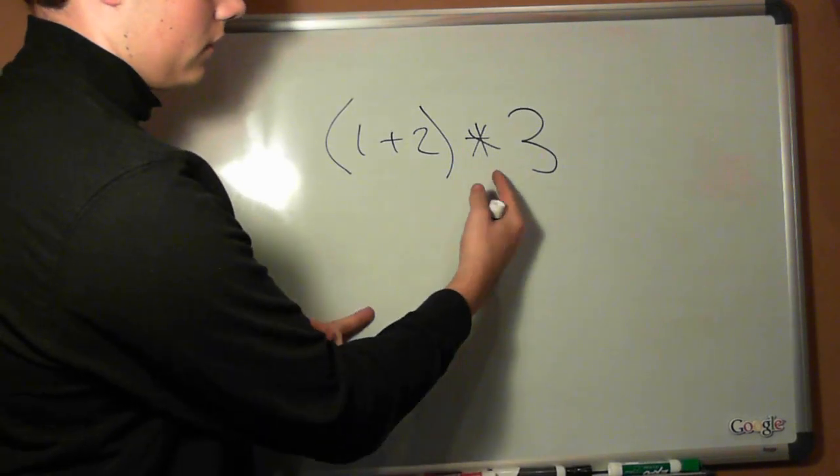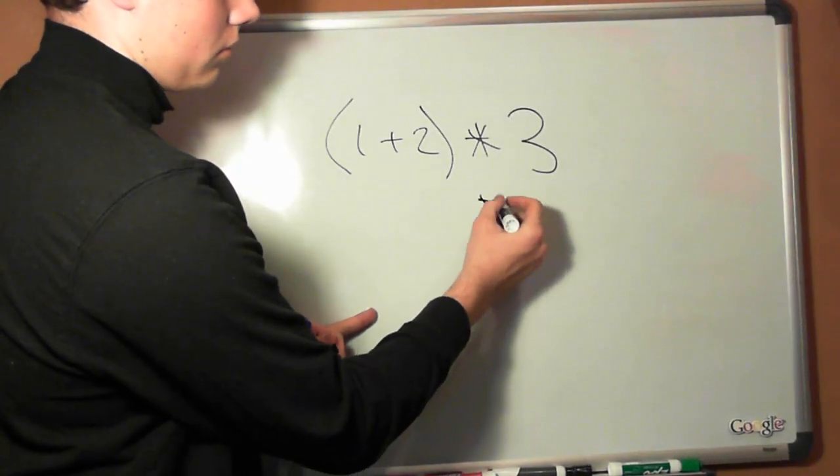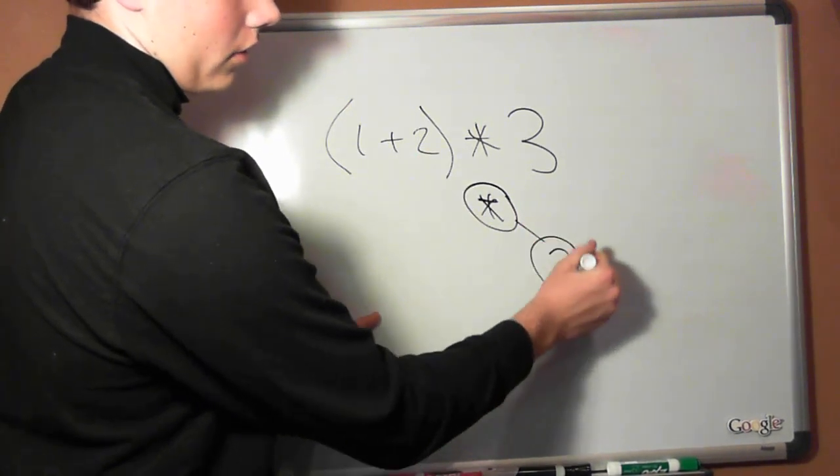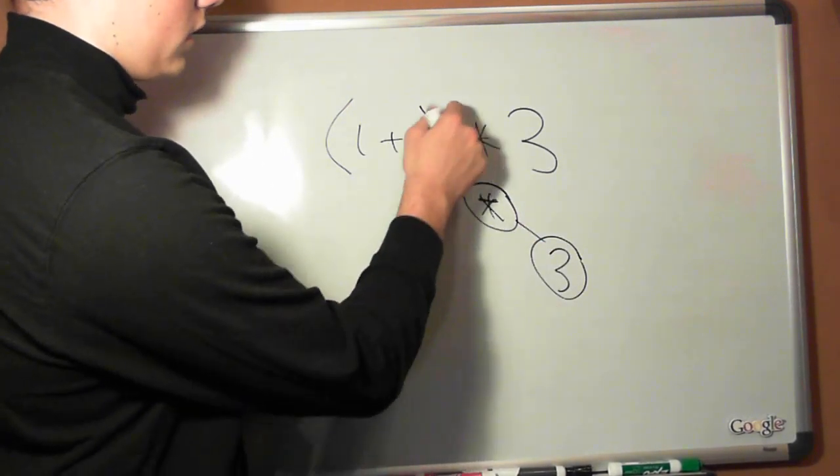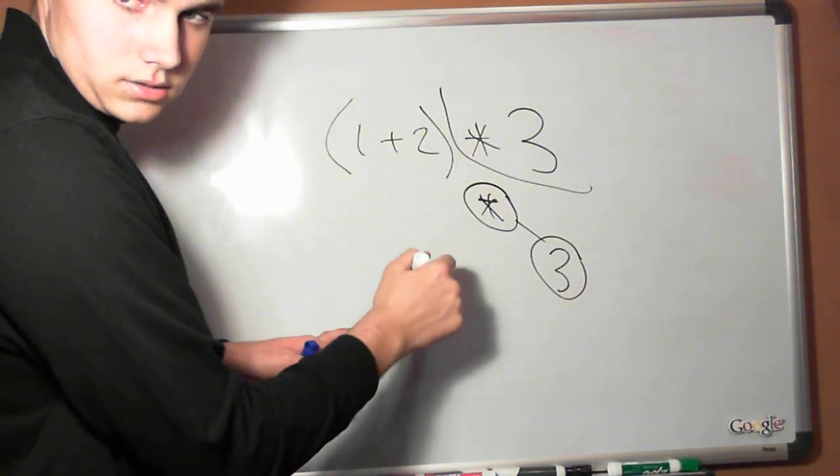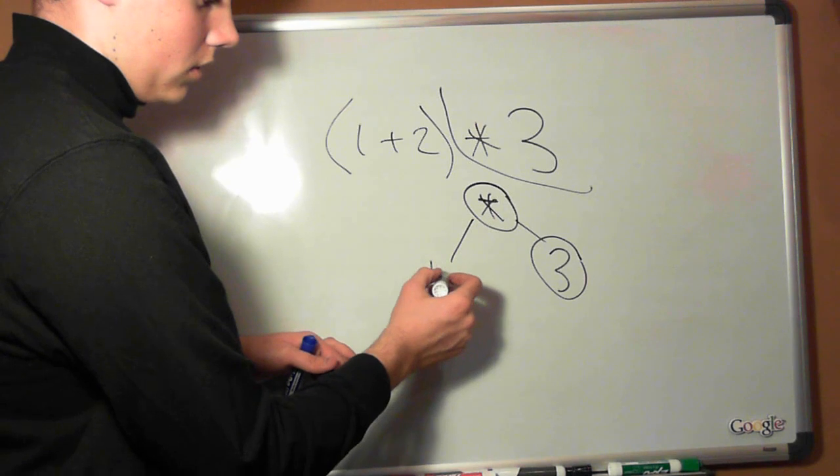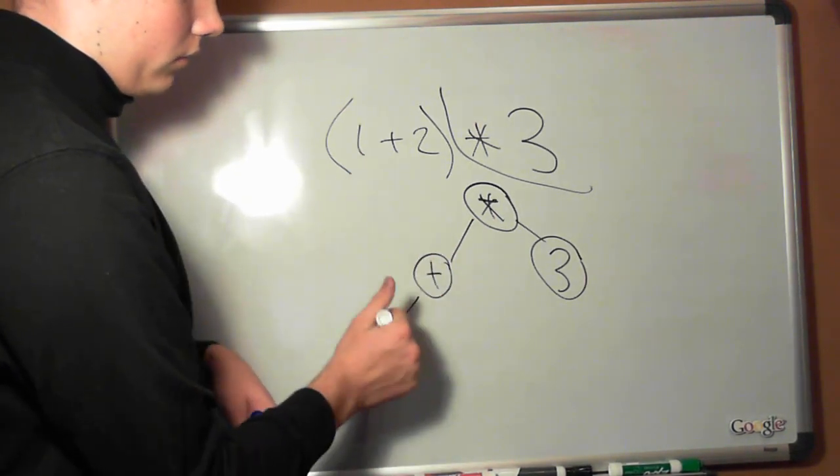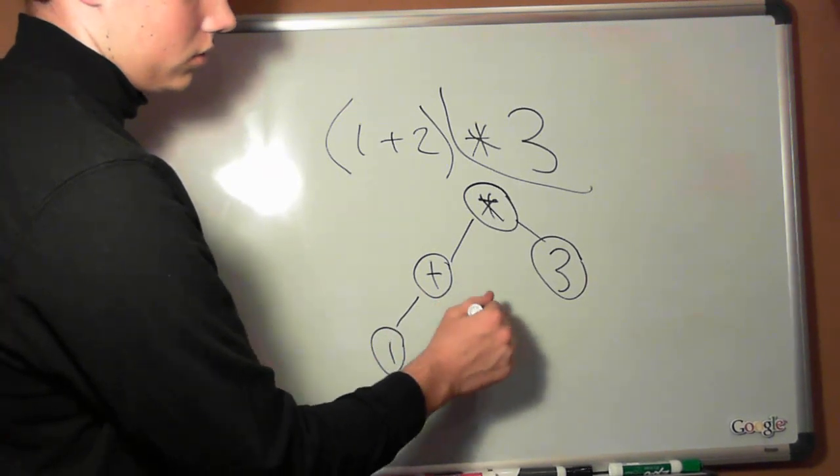We need to take this multiplication symbol and make that our root node. Make 3 our right subtree and we're taking this 1 plus 2 inside the parentheses as our left subtree, with the plus as the parent node of these 1 and 2 child nodes.